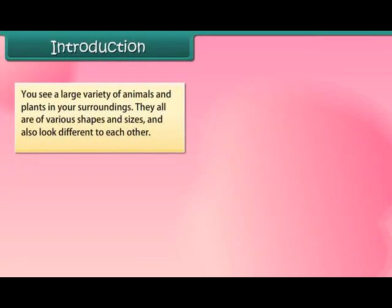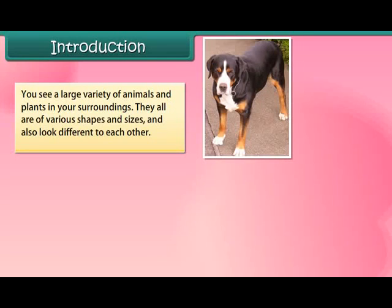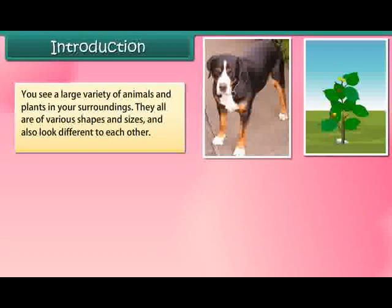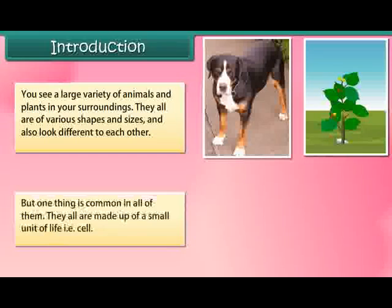You see a large variety of animals and plants in your surroundings. They all are of various shapes and sizes and also look different from each other. But one thing is common in all of them — they all are made up of a small unit of life, that is, the cell.